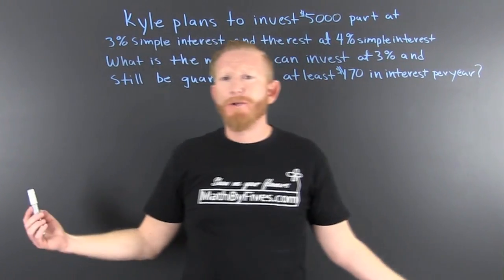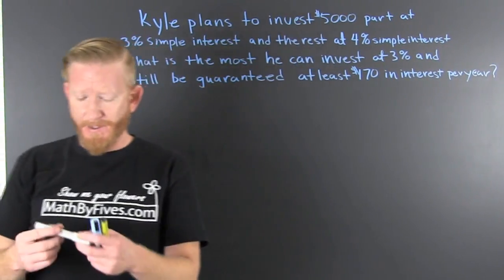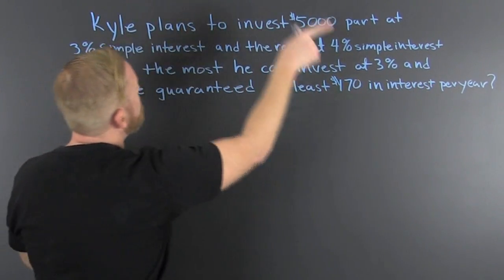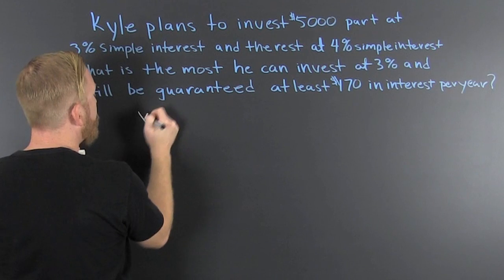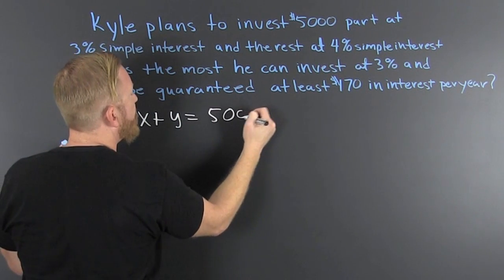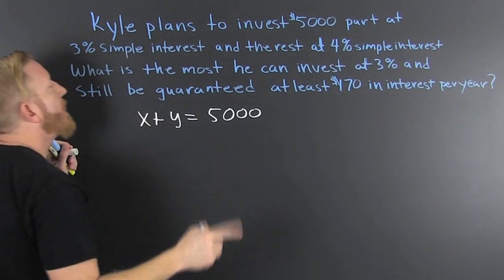I don't know, maybe he wants to pay part of his cable bill or something like that. What do we have going on here? Kyle plans to make two investments. X + Y = $5,000.